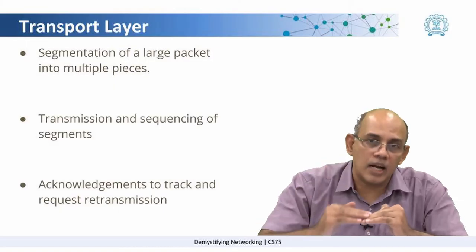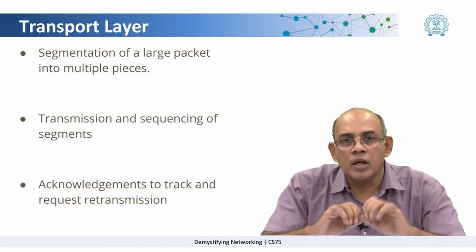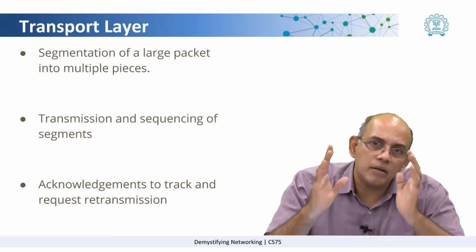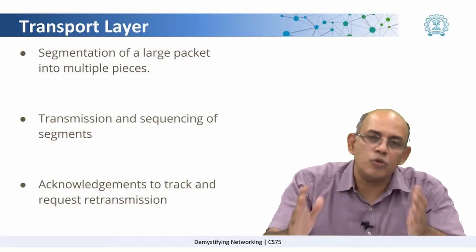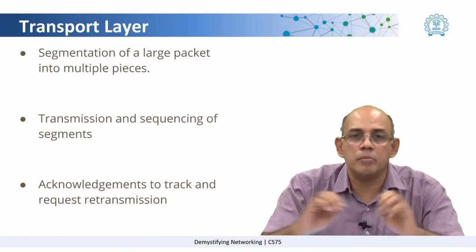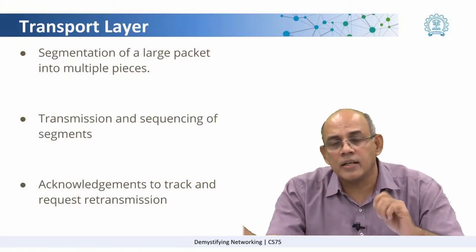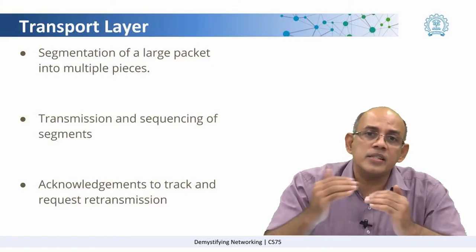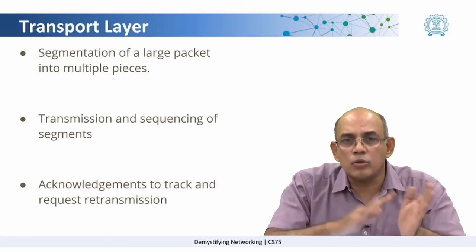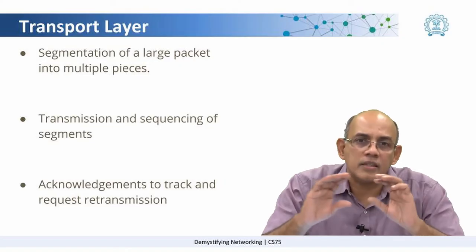Because each segment goes separately, some segments may get lost or some may arrive before others. Hence we need the transport layer, which keeps track of these segments. The job of the transport layer is to take the document, split it into multiple segments, keep track of them by sequencing them with sequence numbers, and communicate with its peer at the other end to determine which sequences have been received, which segments are missing, and which need to be retransmitted. There is the notion of acknowledgements. This broadly is the work of the transport layer.